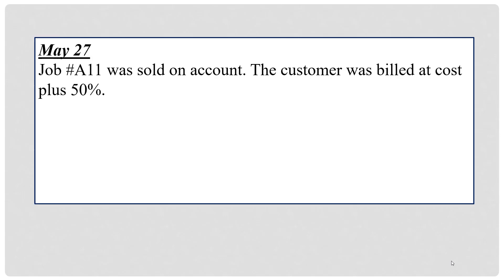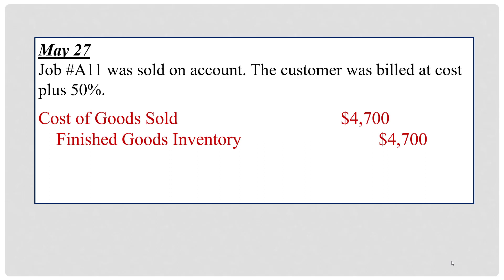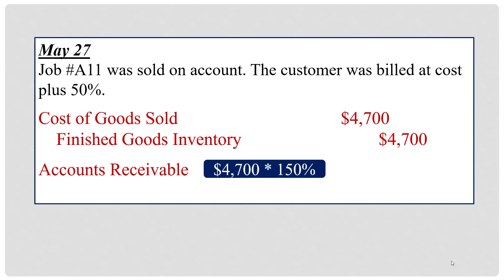On May 27th, Job A11 was sold on account, with the customer billed at cost plus 50%. We record two things. For the cost of the sale, debit cost of goods sold for $4,700 and credit finished goods inventory — moving that cost to the expense account since we no longer own the inventory. To record the sale, debit accounts receivable for $4,700 × 150% = $7,050, and credit sales for $7,050.